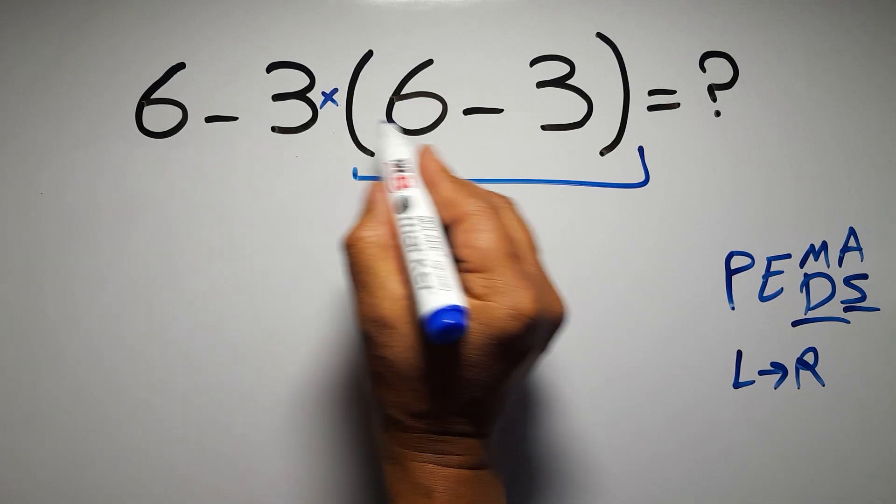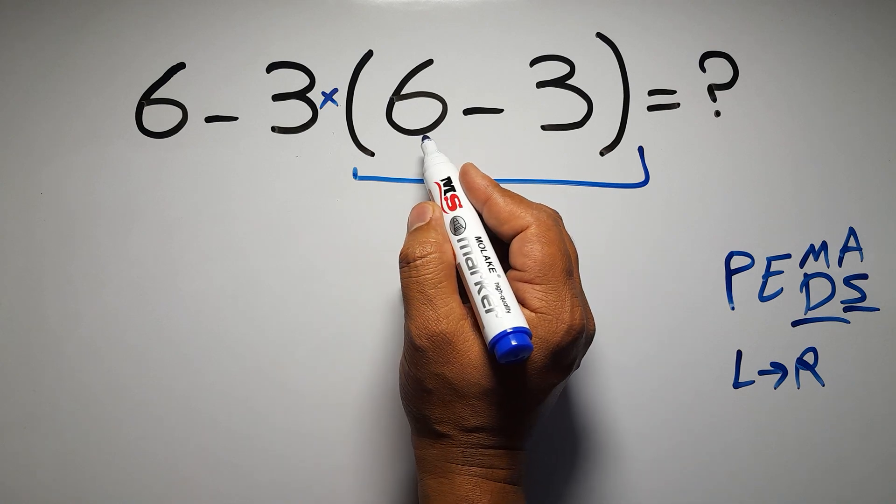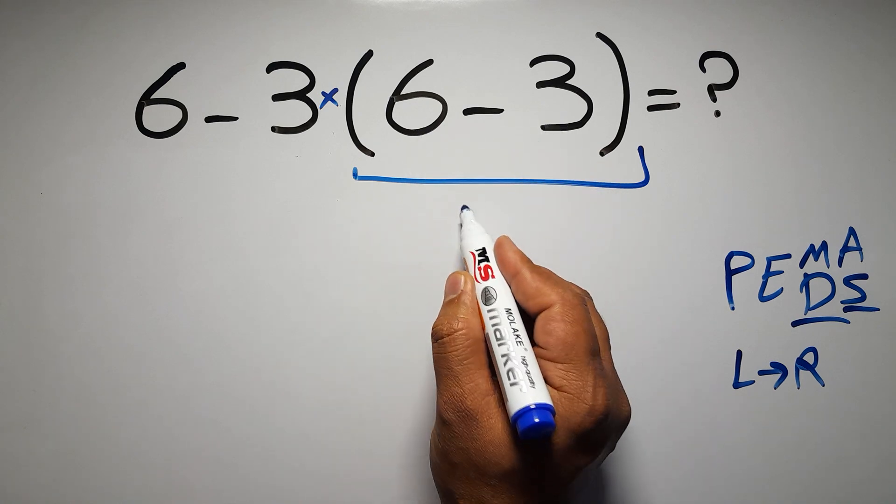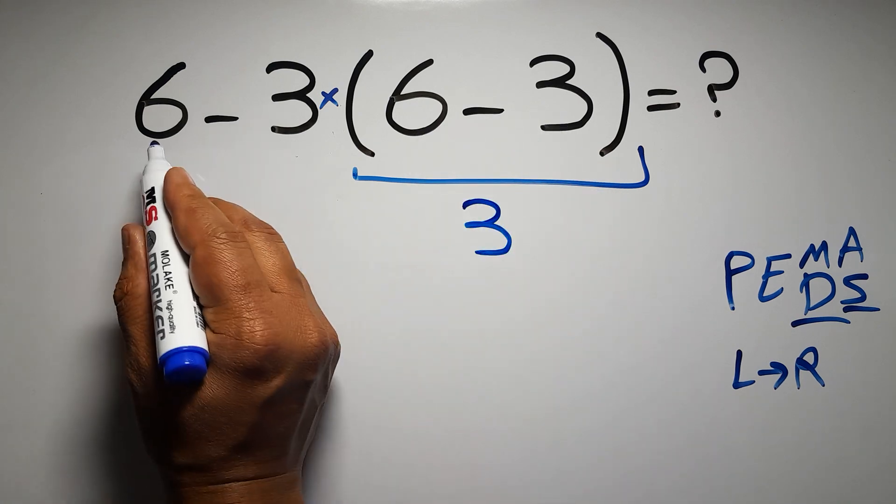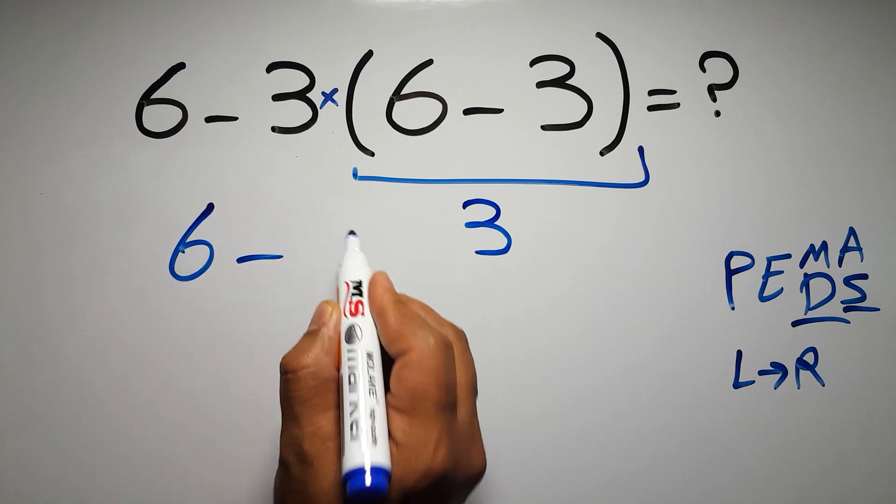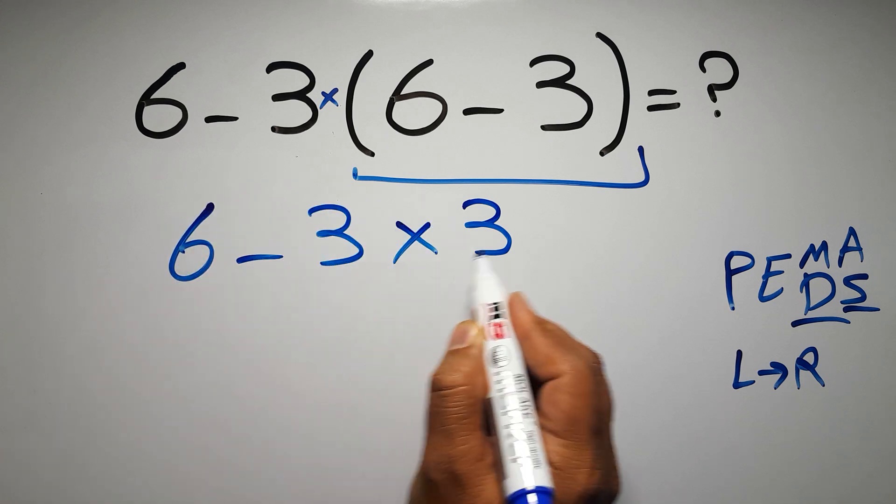So first these parentheses. Inside these parentheses, we have 6 minus 3. So we have 6 minus 3 times 3.